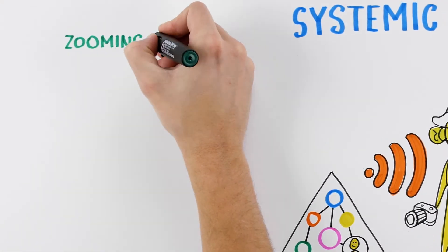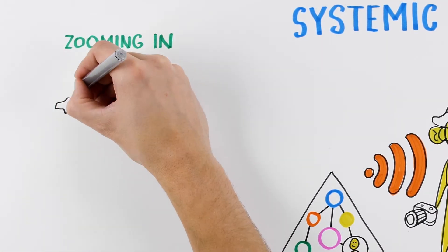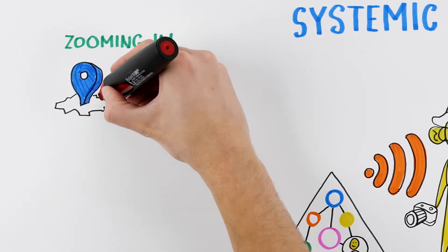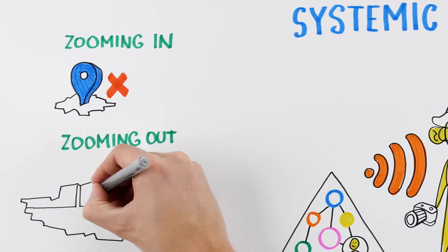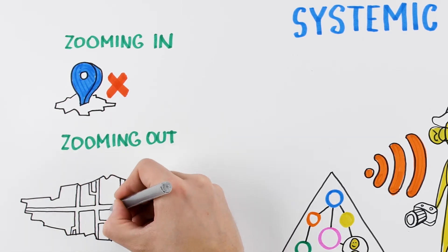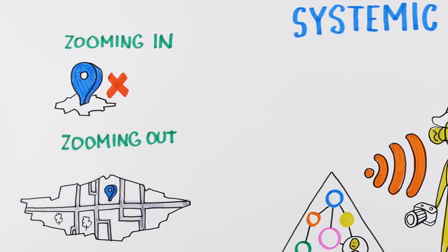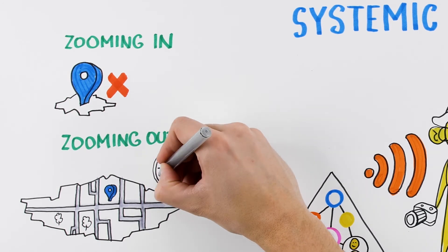To do that, you need to cultivate a special attitude of seeing. Instead of zooming in, you need to zoom out to see the system as a whole, and even as part of the larger system it belongs to. This applies to both space and time.